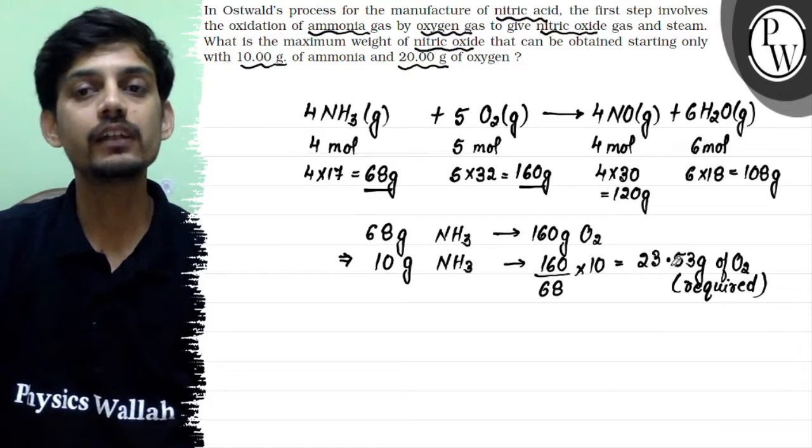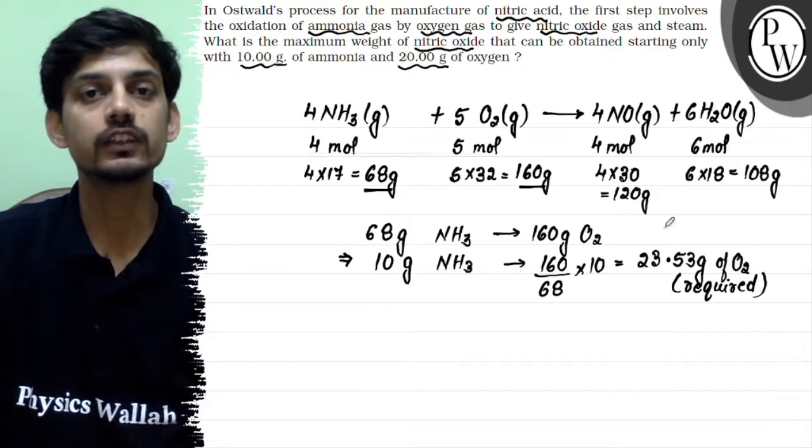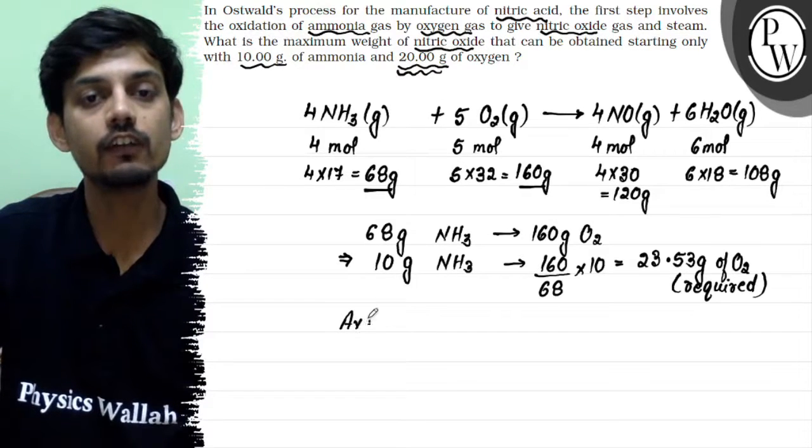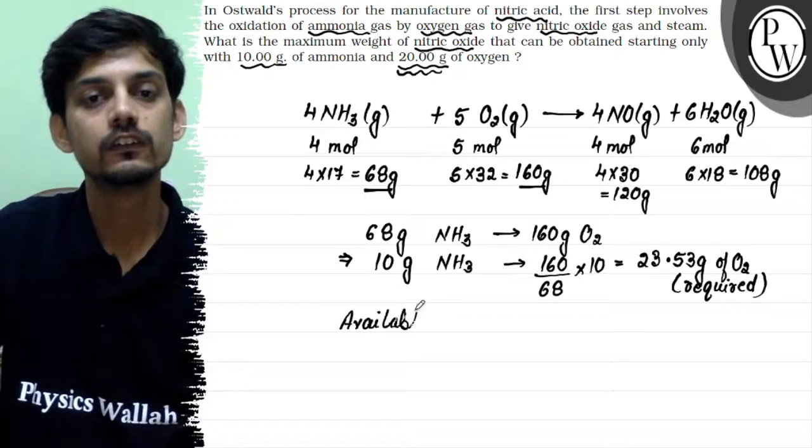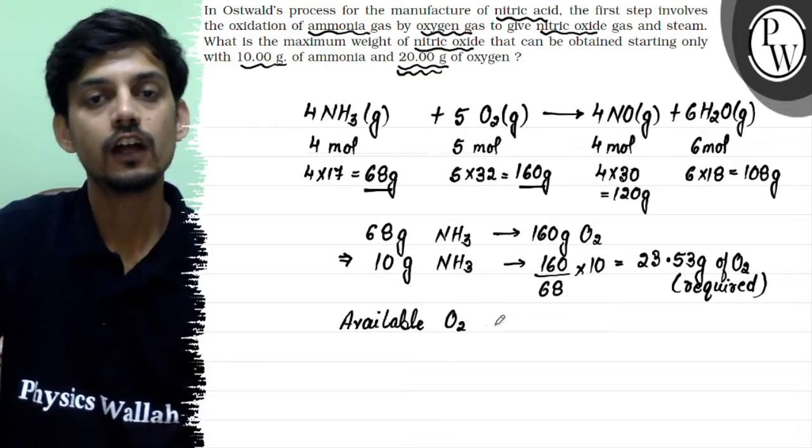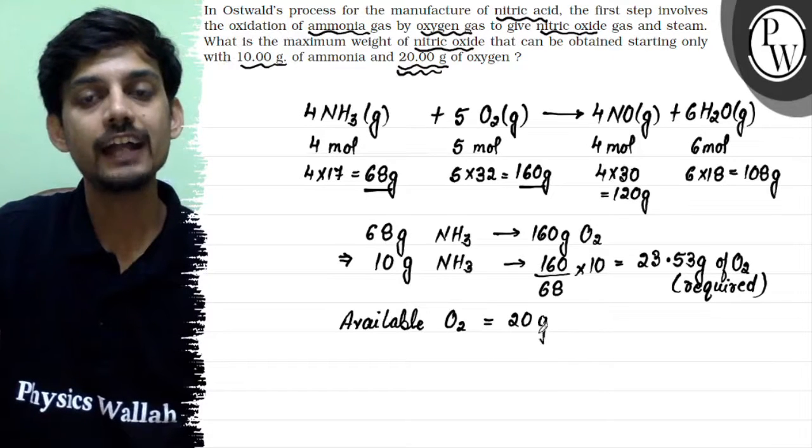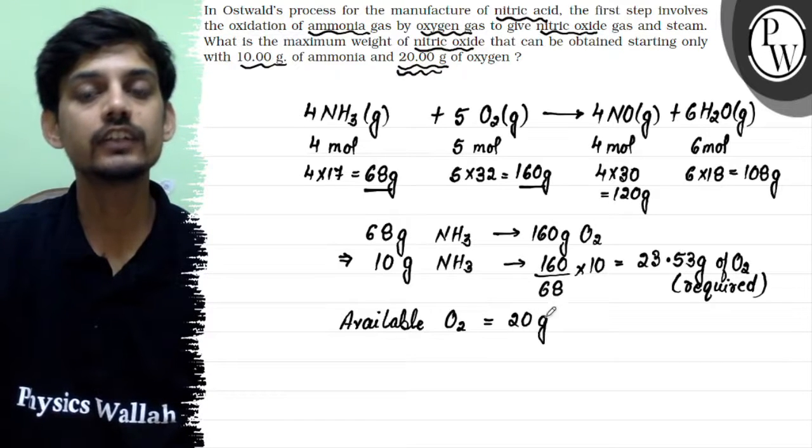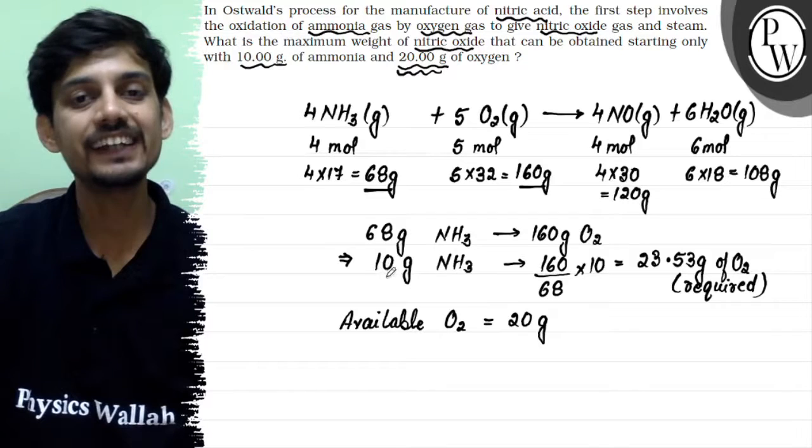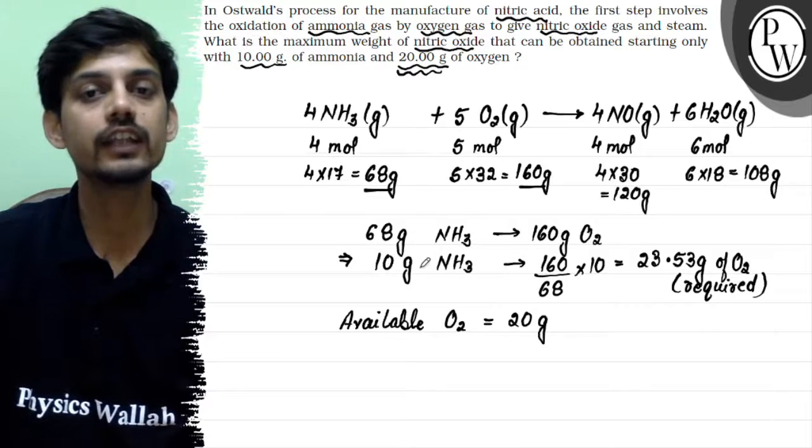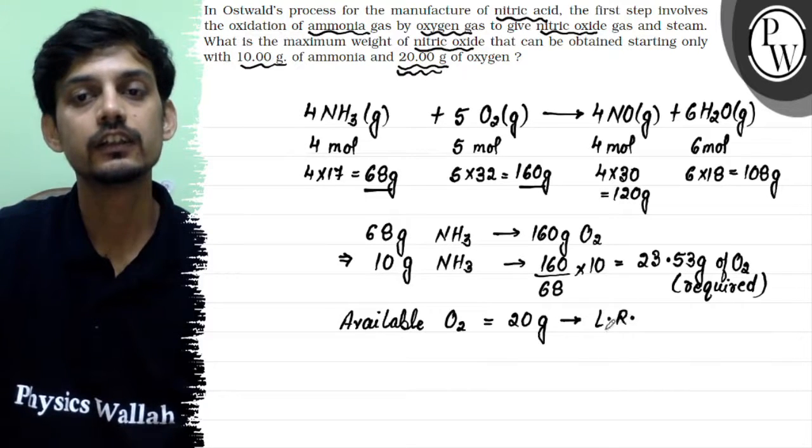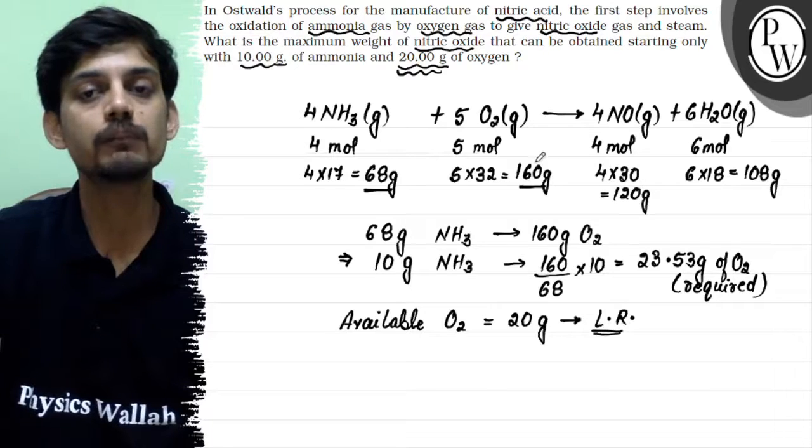We will be requiring 23.53 grams of oxygen, but the available amount of oxygen is only 20 grams. That means the available oxygen is less than required. If we have less oxygen, the reaction will stop when the oxygen runs out. That means oxygen here is the limiting reagent.